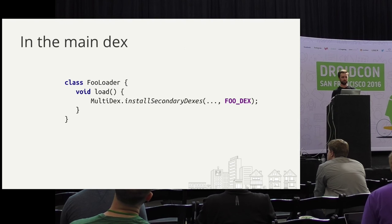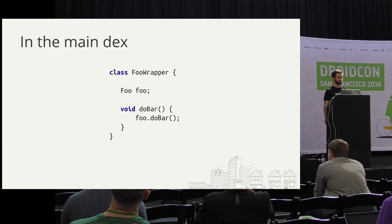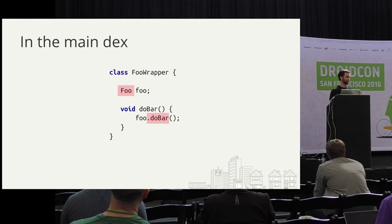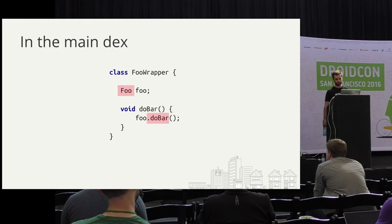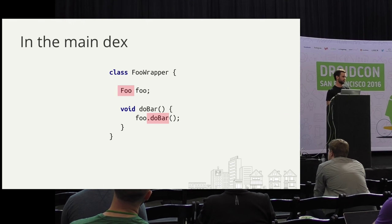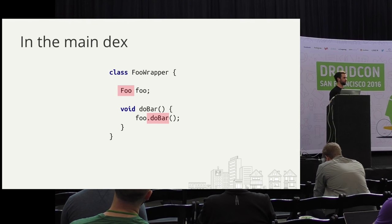We need some way to load this, so we'll make a separate loader — a FooLoader. It knows where the dex file is, and we can piggyback on the Multidex methods. When you call load, we use the installSecondaryDexes method, and that will bring in that library. Next we need a wrapper around the foo class that delegates all the methods to it. The foo class and its methods are not in the main dex file, so they get filled in with stubs. Using the FooLoader, if we make sure that gets called beforehand, all these methods will work. You can add checks in FooWrapper to ensure that FooLoader has been called, since anyone could call foo methods anywhere and it would essentially break.